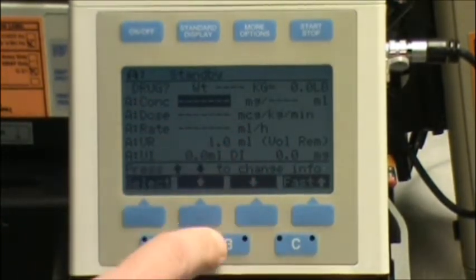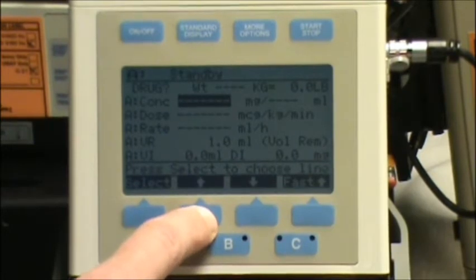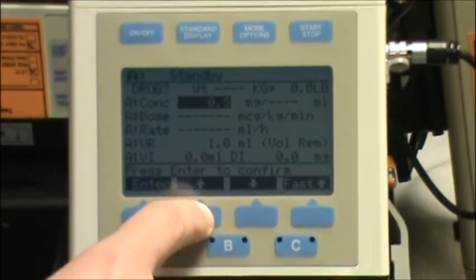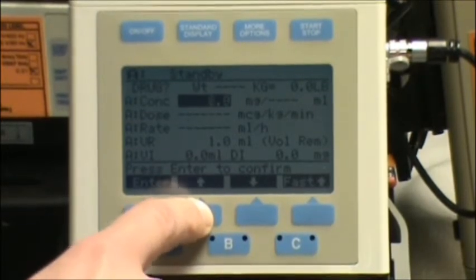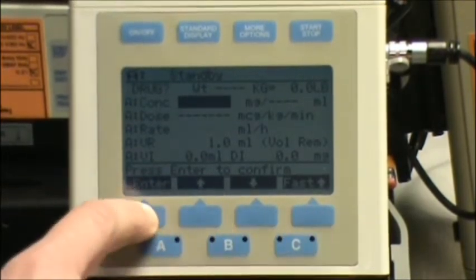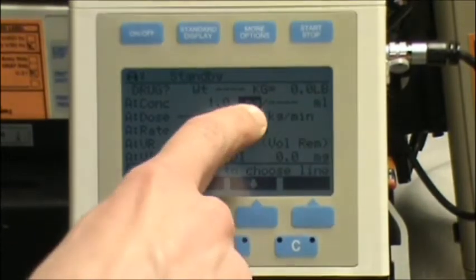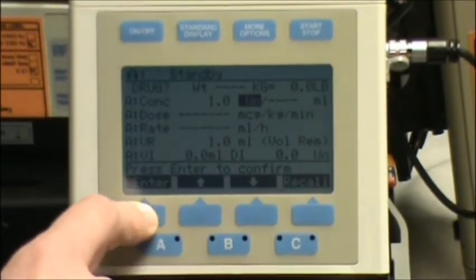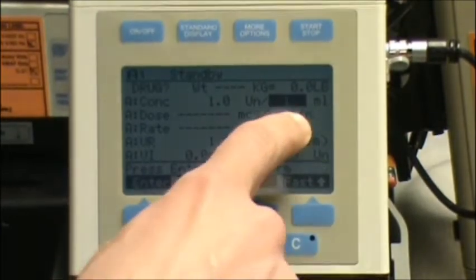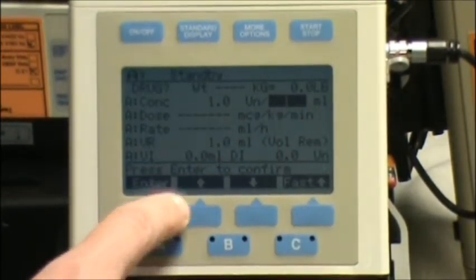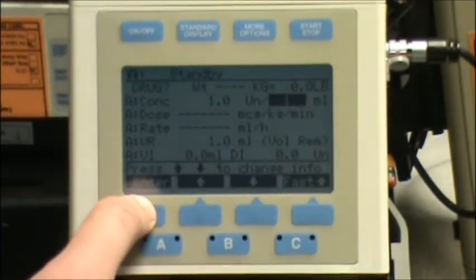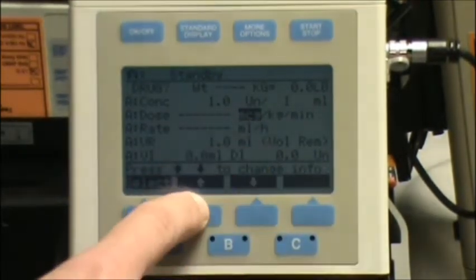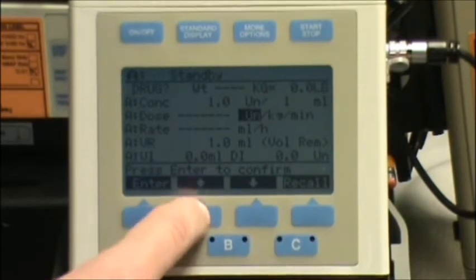So my concentration is 1 unit to 1 ml. So I'll press the up arrow key. Enter. I'm going to change milligrams to units using the up arrow key. 1 unit to 1 ml. I'm going to change this to units. Press enter.